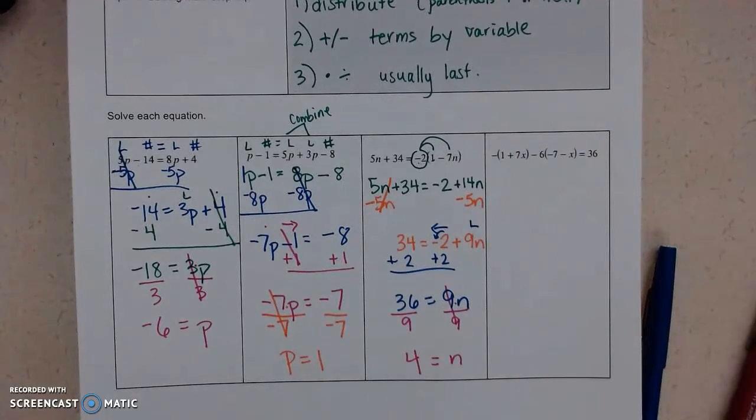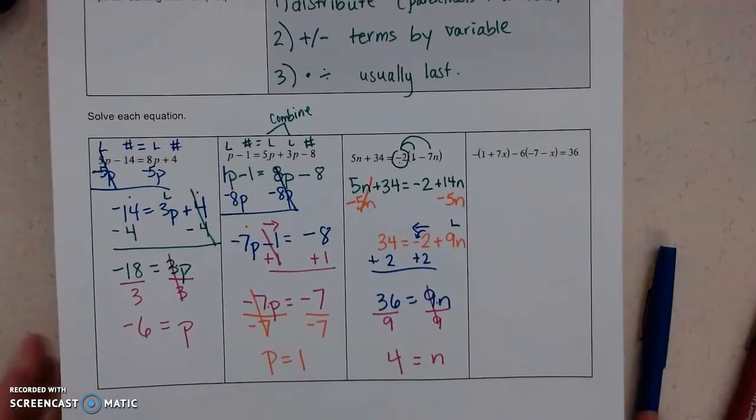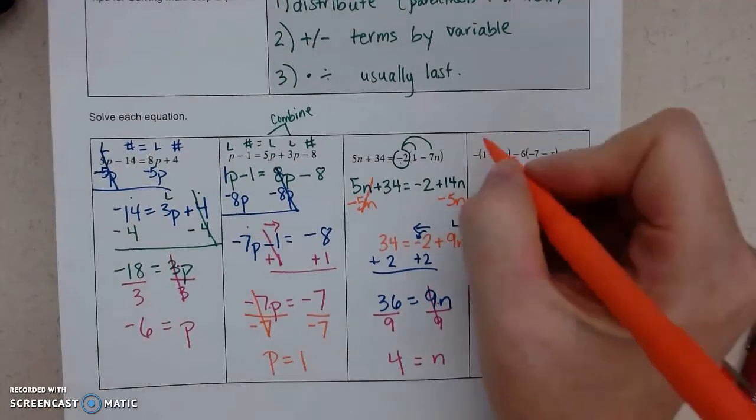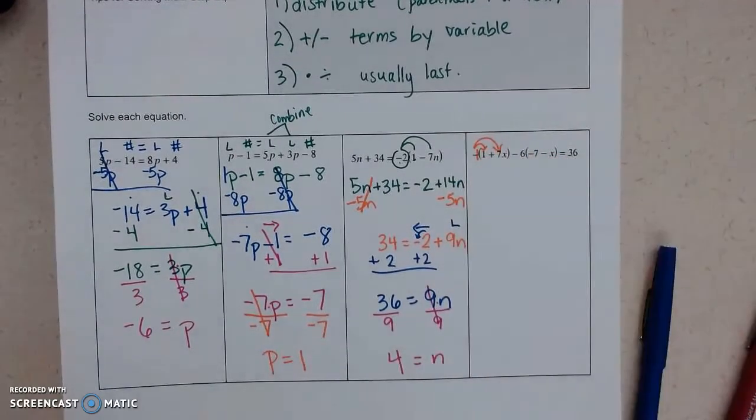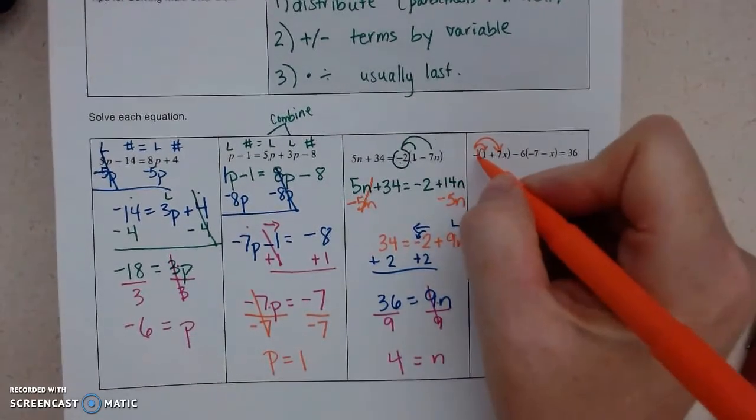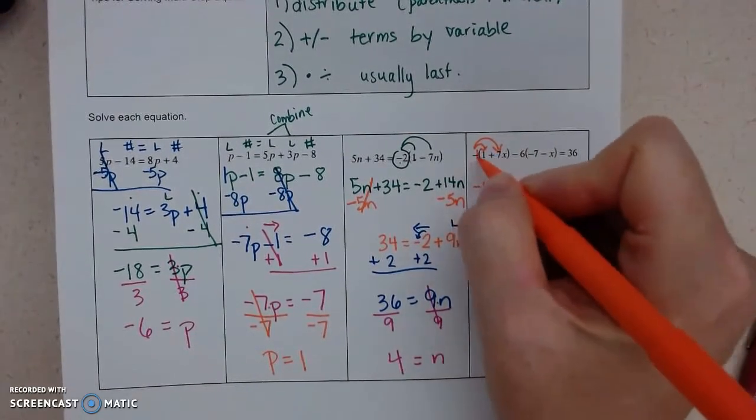All right, and the last one is about as complicated as it's probably going to get this section. So there's a negative in front of the first parenthesis, which is like a negative 1. So that's what we're going to multiply by both terms. So negative 1 times 1. Negative 1 times 7.